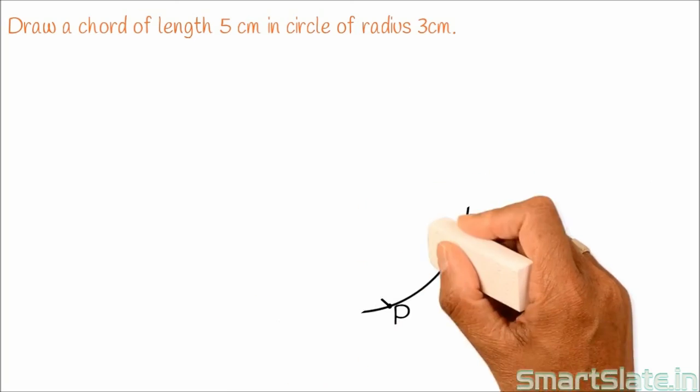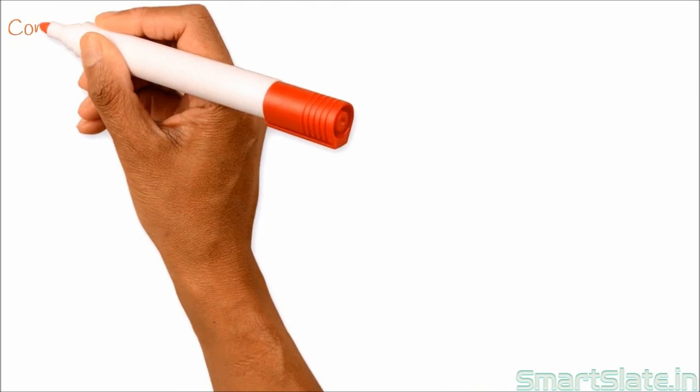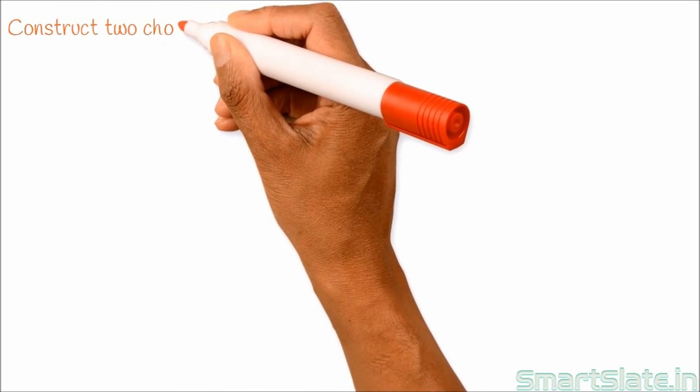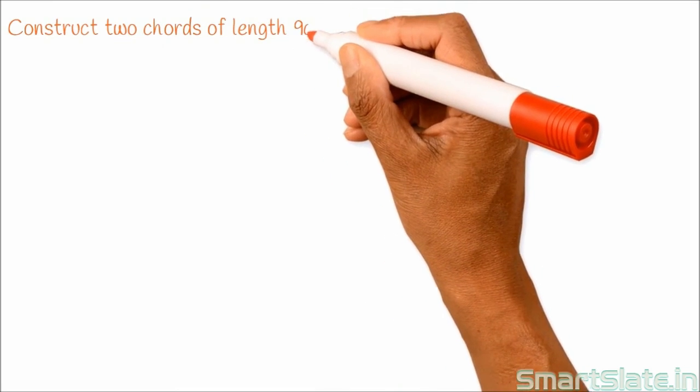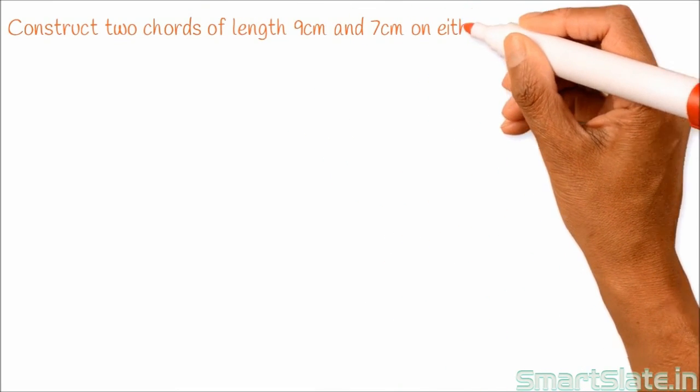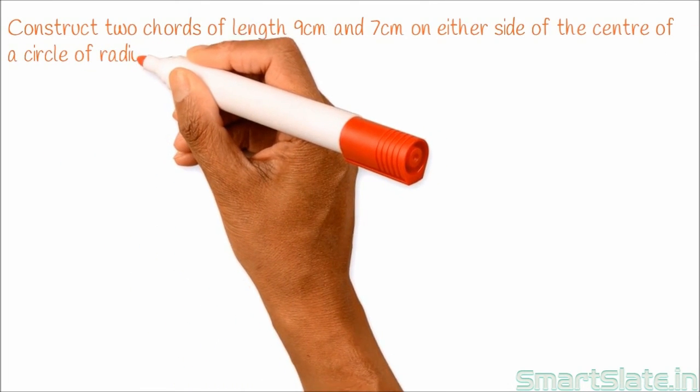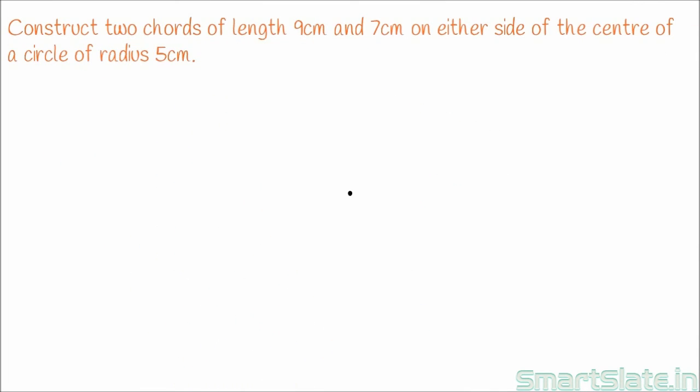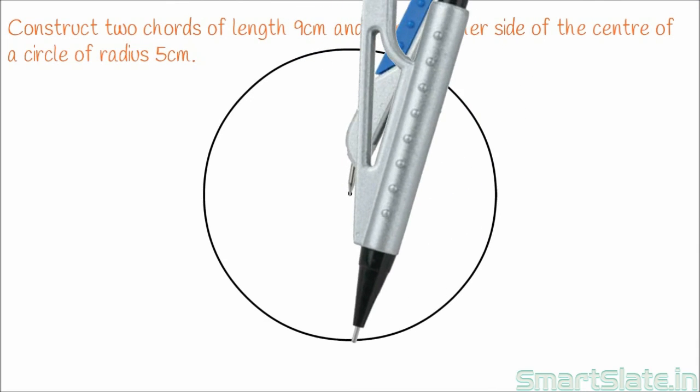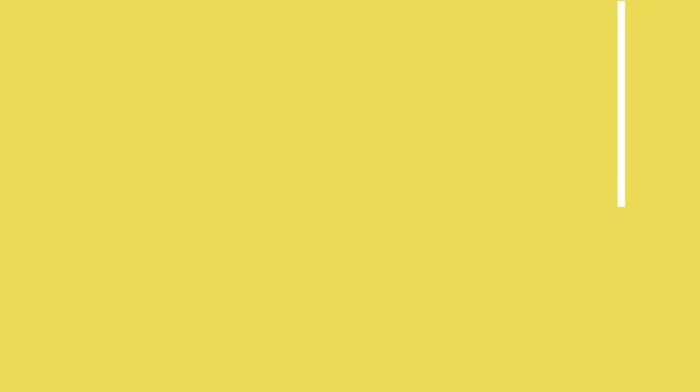Let's solve another problem. Construct two chords of length 9 cm and 7 cm on either side of the center of a circle of radius 5 cm. Mark this point O as a center. Keeping this as a center, draw a circle of radius 5 cm.